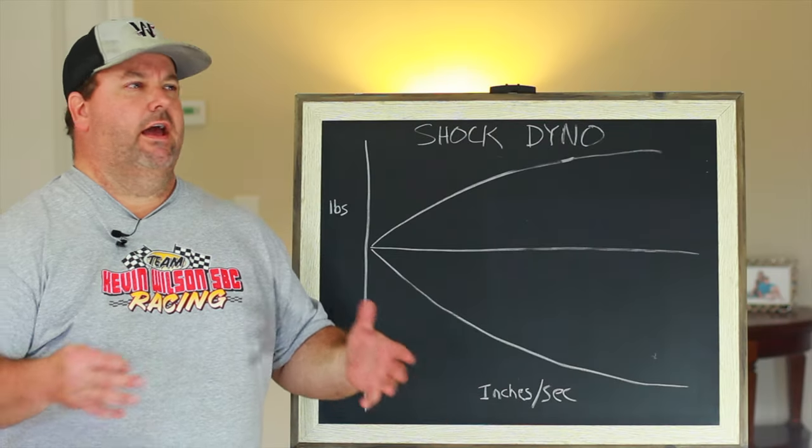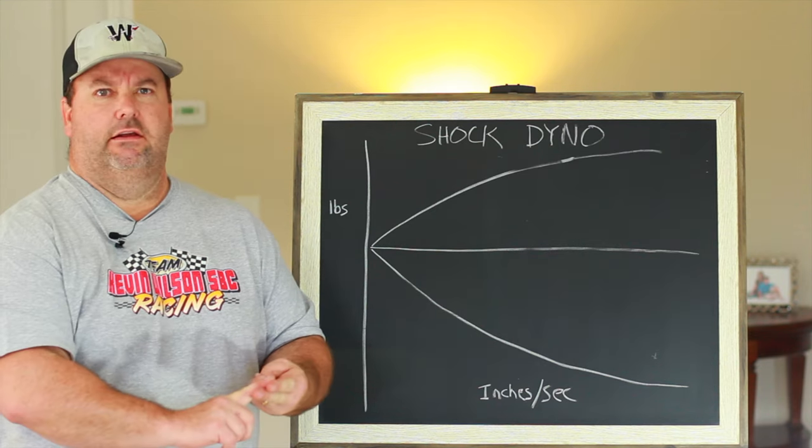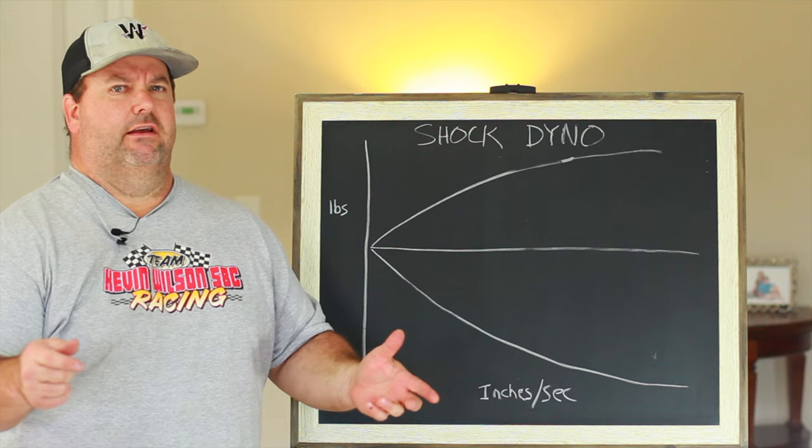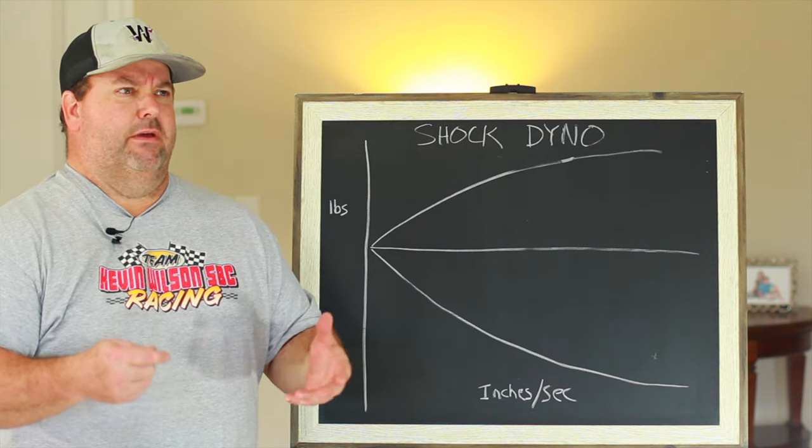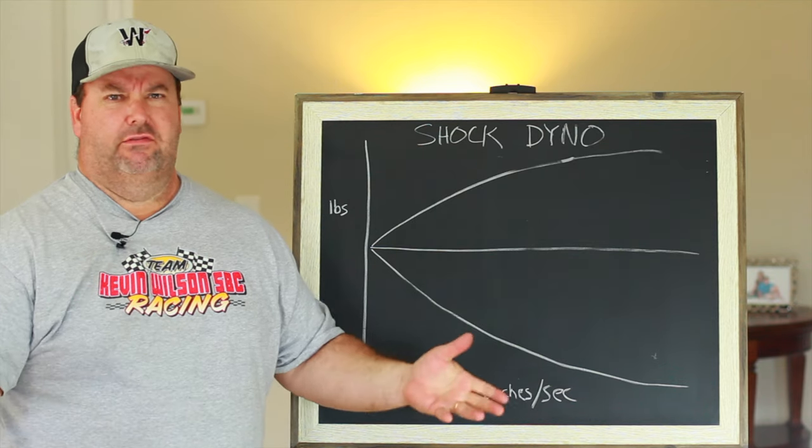I don't understand all this. I have double adjustable shocks with 18 clicks of compression and 18 clicks of rebound. If I go all the way to 18 clicks of rebound, that means the shock can't extend. That just makes sense, right?